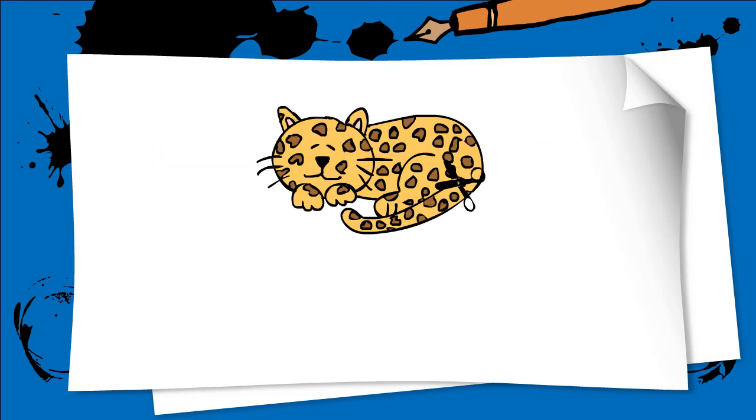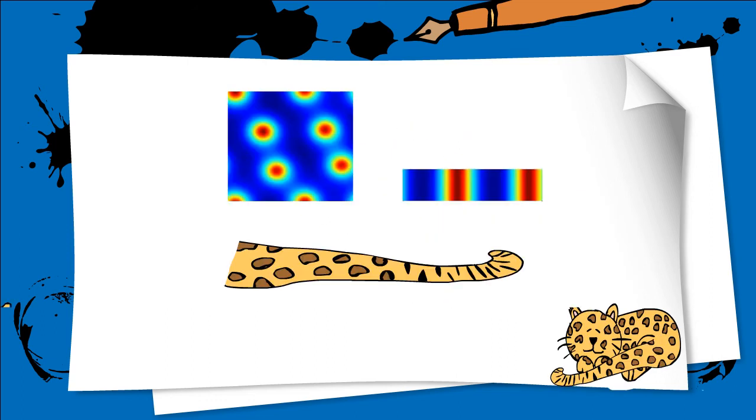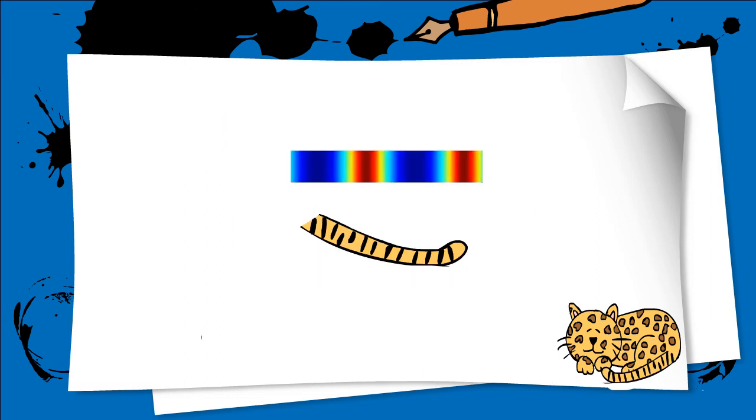Our model would predict that the tails that taper off will start off having spots, and then switch to stripes. The thin tails will only have stripes, and the thick tails will have dots.